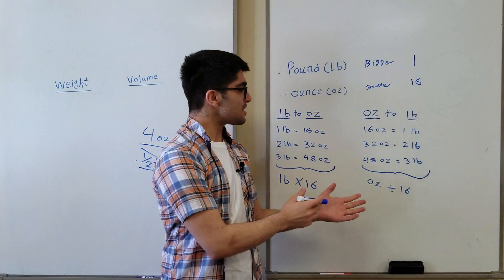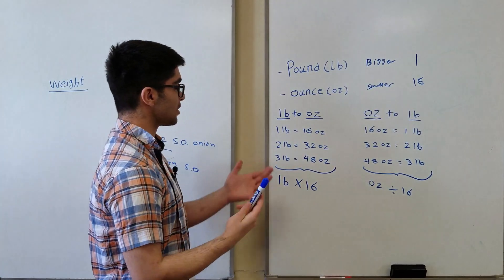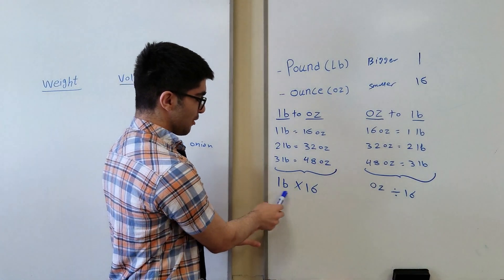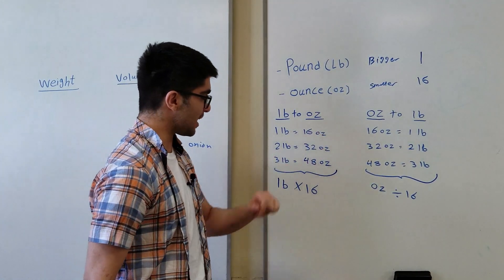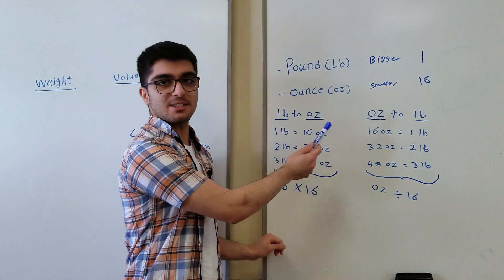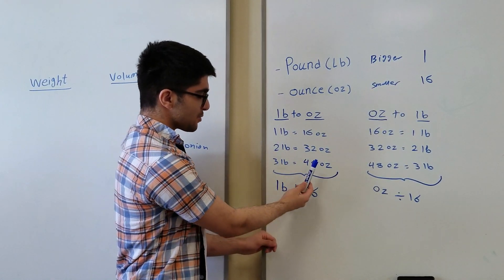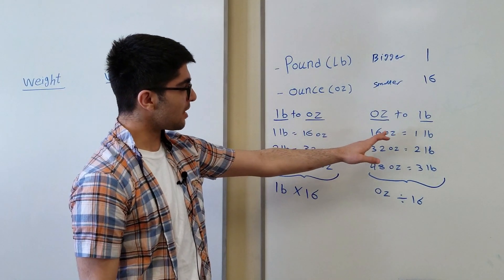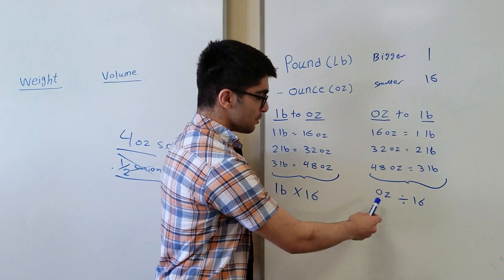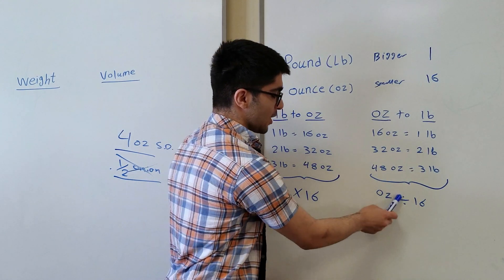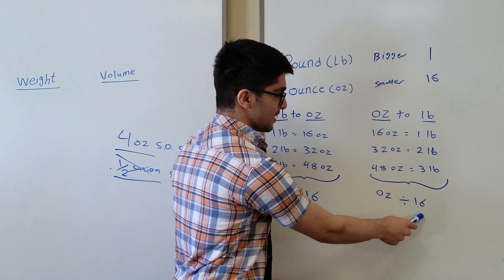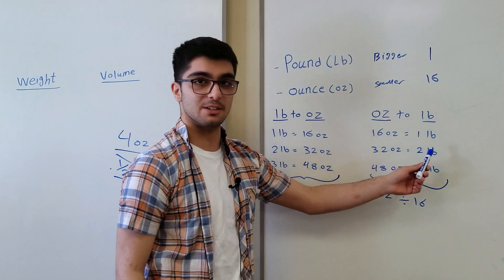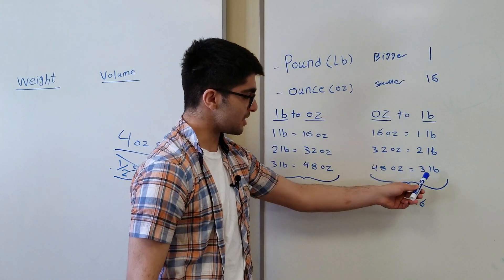So this is basically a recap of the whole video. If you want to convert pounds to ounces, multiply however many pounds you have by 16 to get the ounces: 1 times 16 is 16, 2 times 16 is 32, 3 times 16 is 48. For ounces to pounds, divide however many ounces you have by 16: 16 divided by 16 is 1, 32 divided by 16 is 2, 48 divided by 16 is 3.